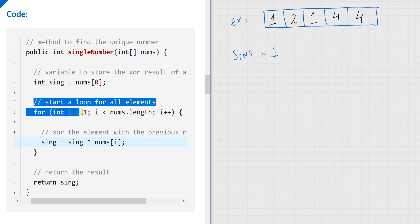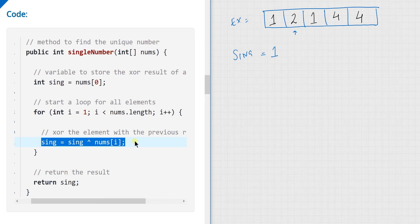So what we are doing next is, we are starting a loop for all the elements, and we start from the element that we haven't read yet, and that is number 2. What we would be doing is, we would XOR the elements with the previous result to get the new element.